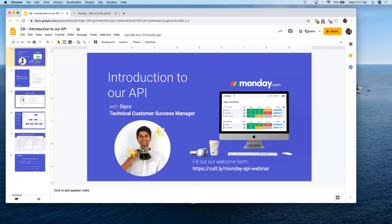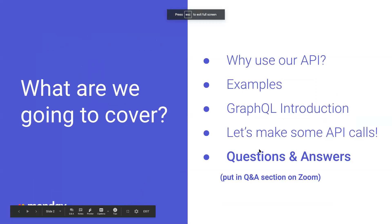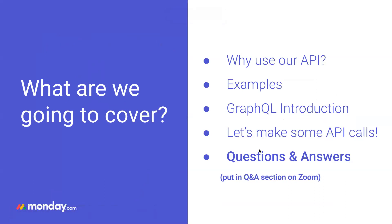Let's go ahead and talk about our agenda for today. To begin with, we're going to talk a little bit about our API at a high level — why do we want to use it, what is an API, and how can I use it to connect monday.com to other tools? After that, I'm going to go through a bunch of examples showing how you can pull data from various places into monday.com and create more flexible integrations and automations.